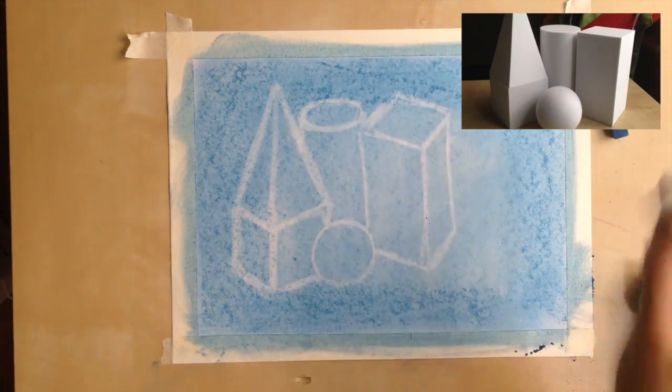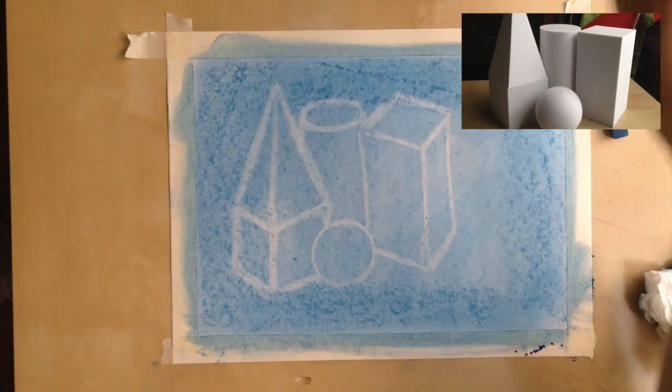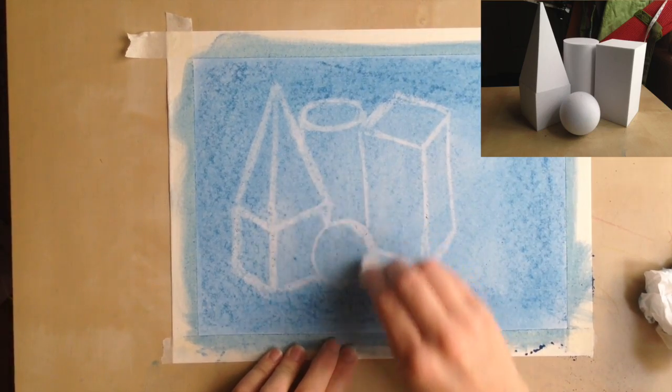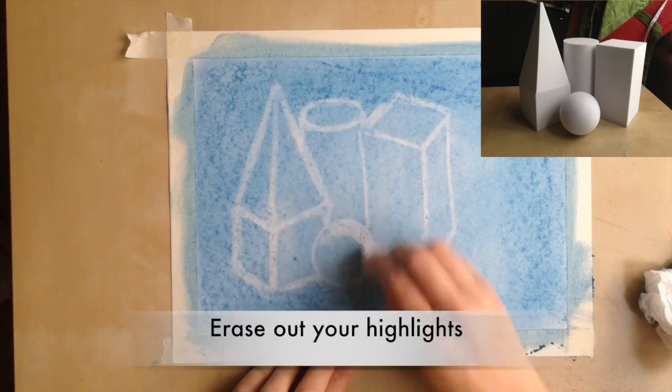Now all we're going to do is we're going to erase out all of the highlights. So all of the lightest parts on there. So here's a picture of it. I'm just going to erase the lights coming from the right. I'm just going to erase that on here.